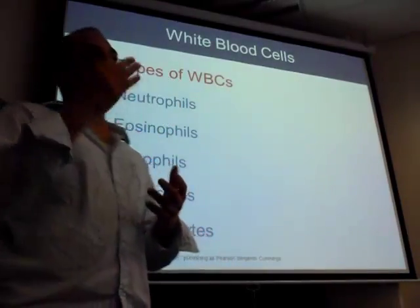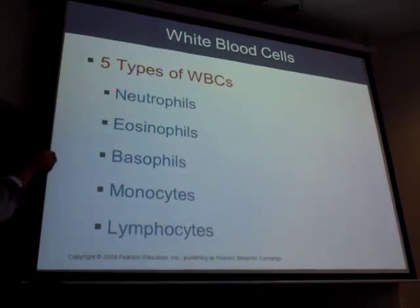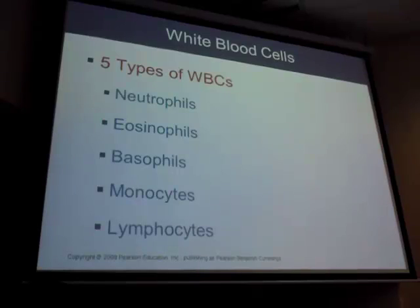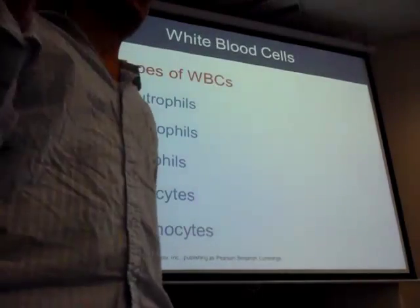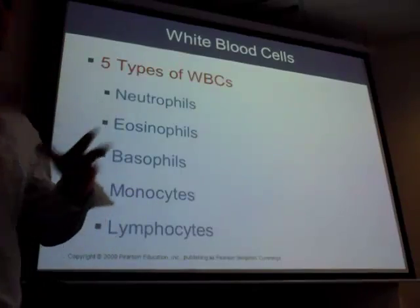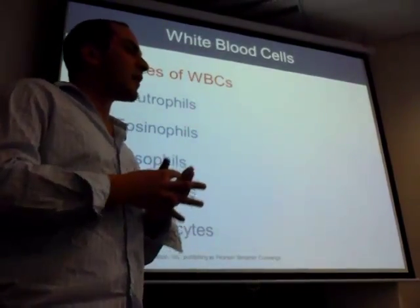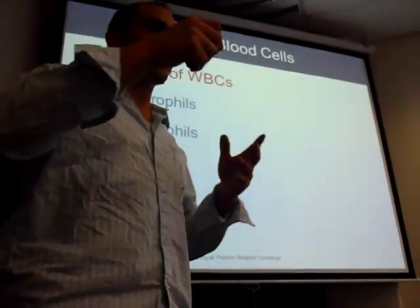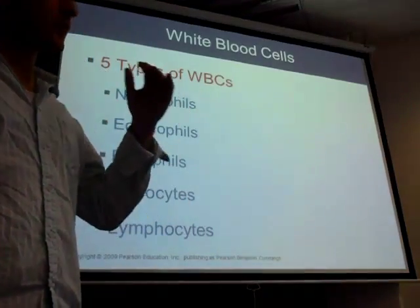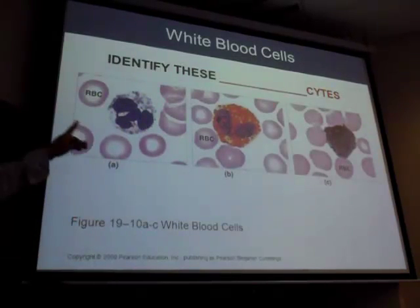Never let monkeys eat bananas — you take the first letter of each word to remember the order. Neutrophils is the first one. The least numerous is basophils. Neutrophils are 50 to 70 percent of white blood cells. I'm trying to organize it so when it comes to the exam you can find information more easily. Neutrophils are the most numerous.